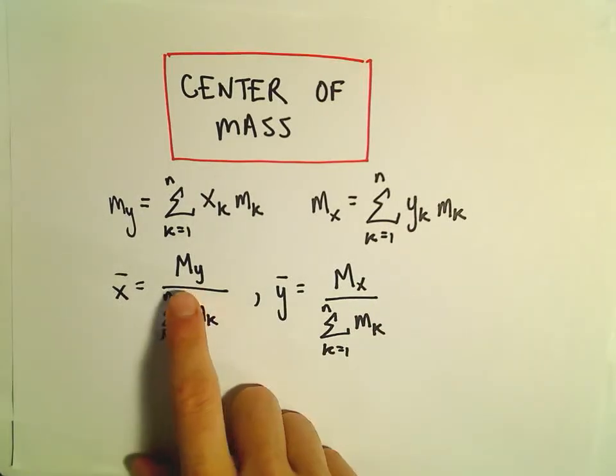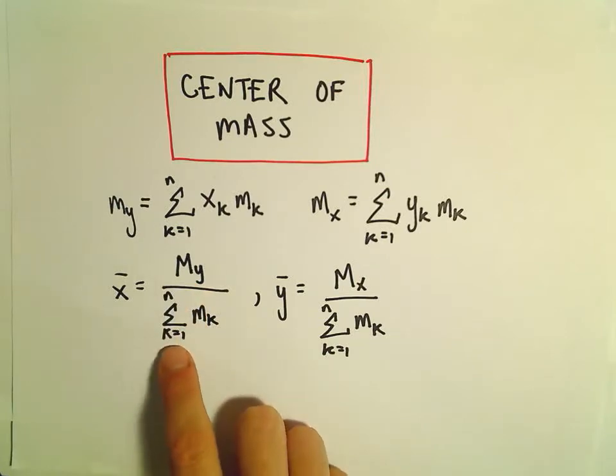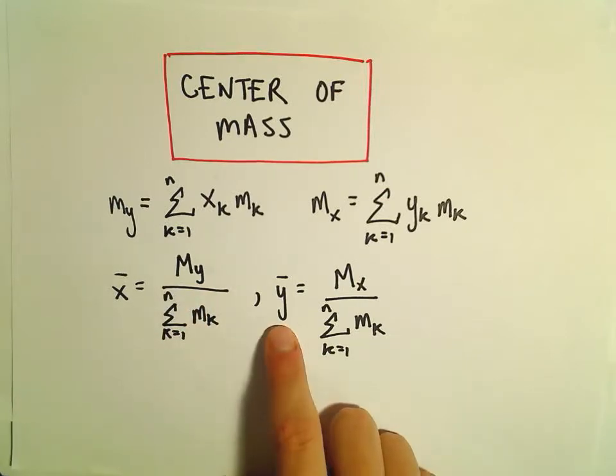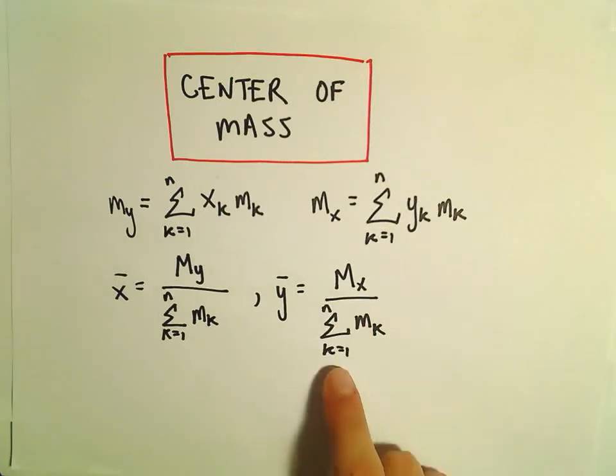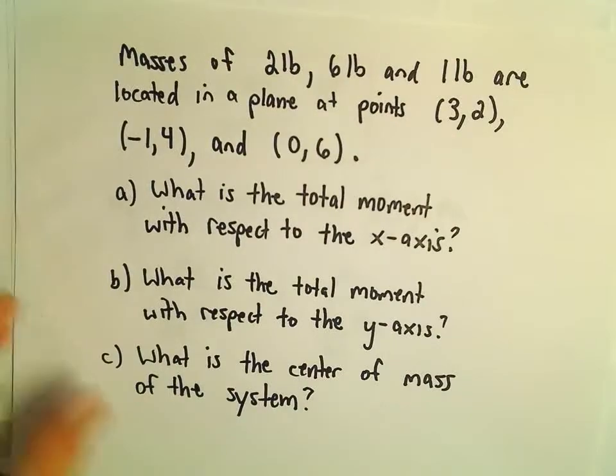To get x-bar, we'll take our m sub y and divide by the total mass. To get y-bar, we'll take the m sub x and divide by the total mass. Let's try to make some sense out of these formulas.